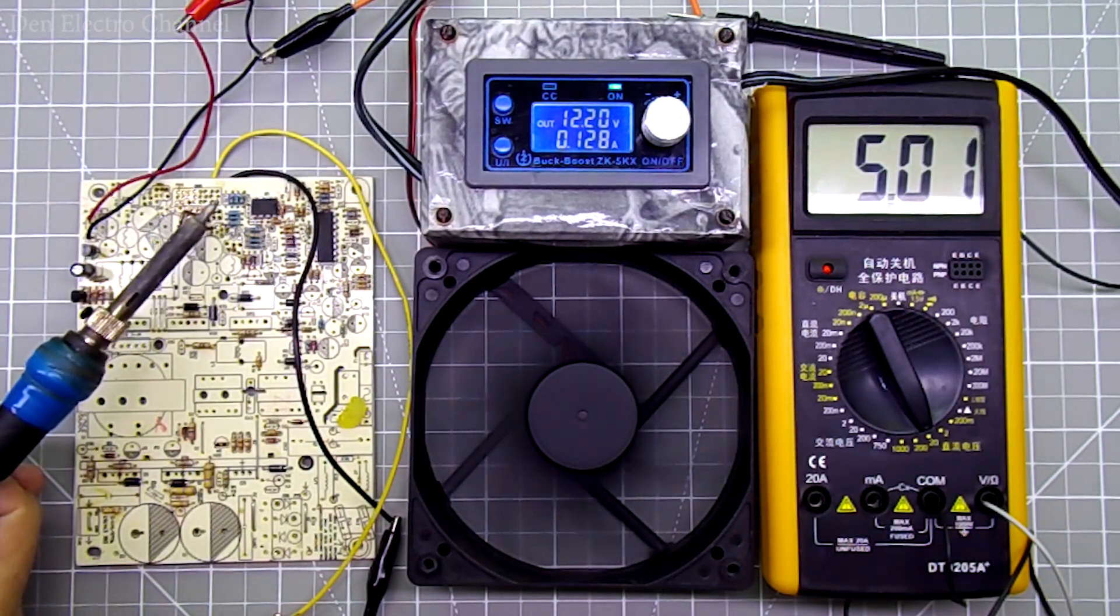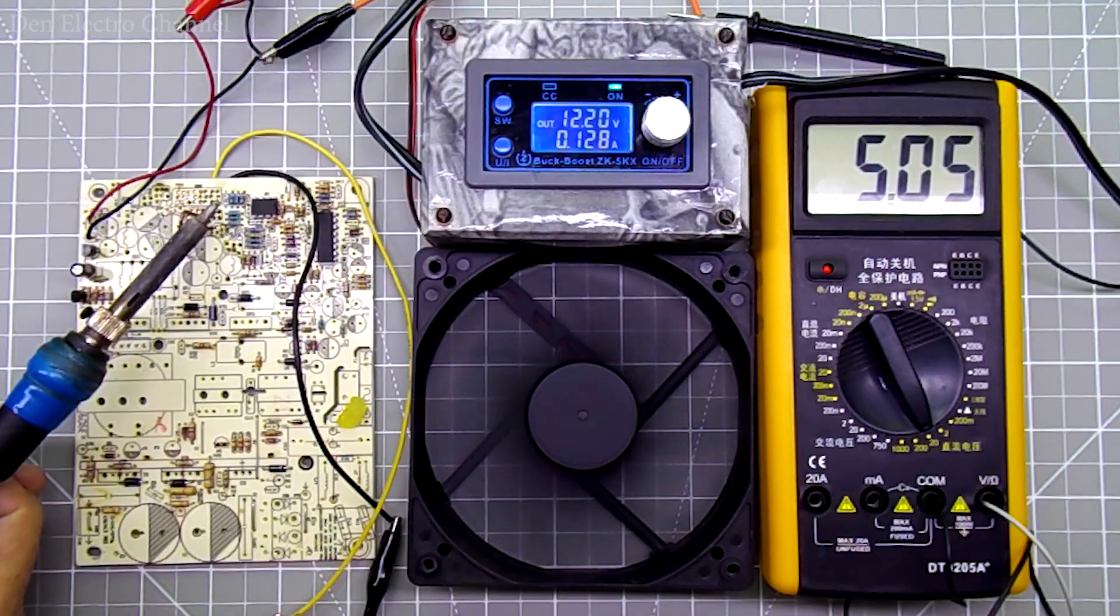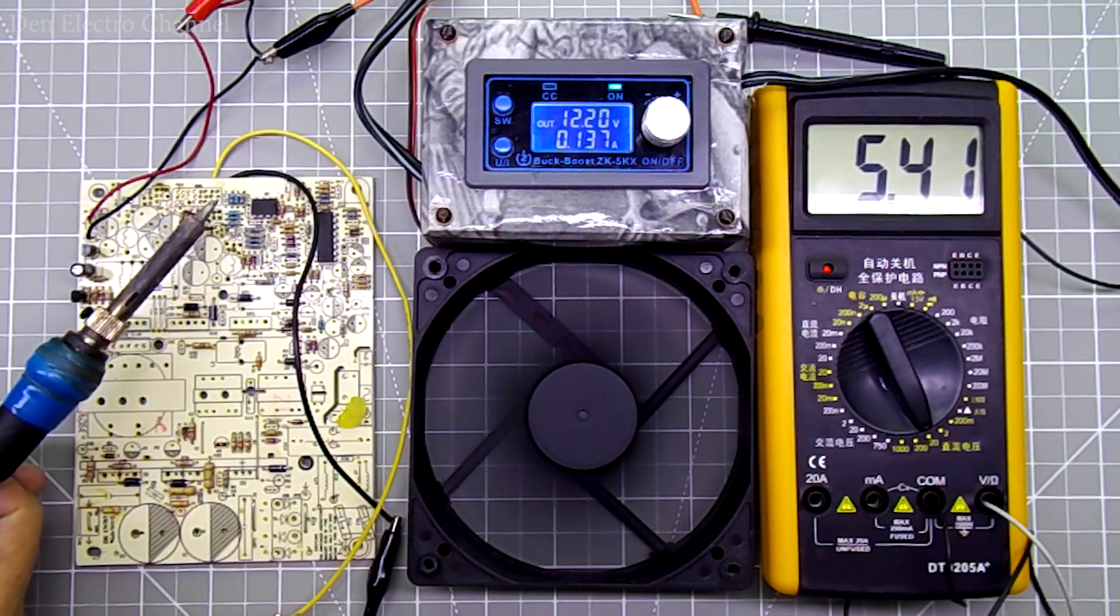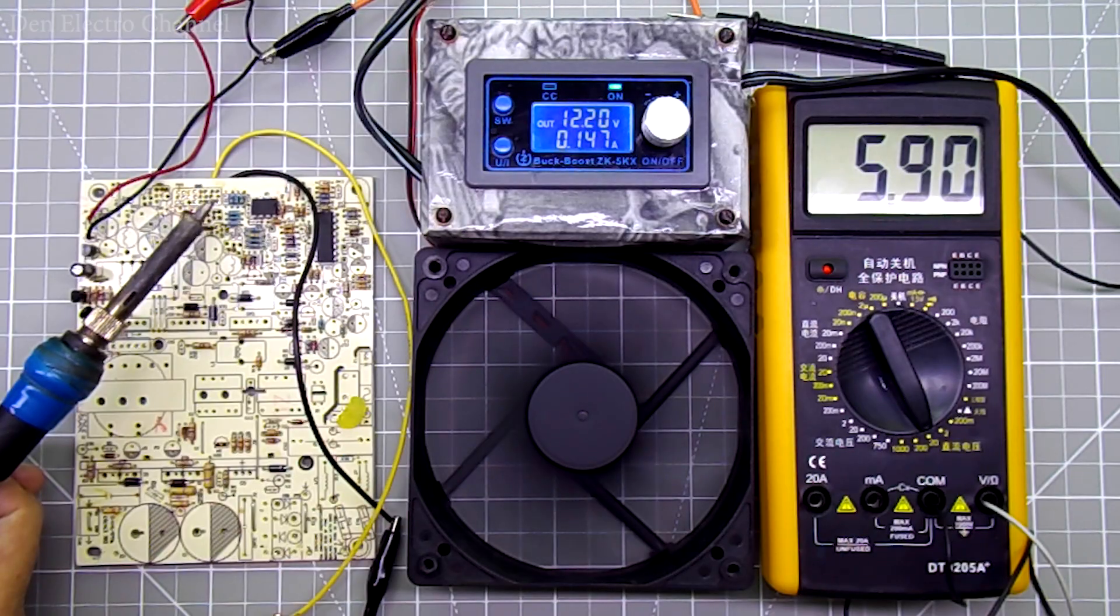Now I will heat the temperature sensor with a soldering iron. I will heat it not with the part where the tin melts, but with the part that is closer to the handle. Well, the temperature there is also not small. Of course, it burns your fingers too.